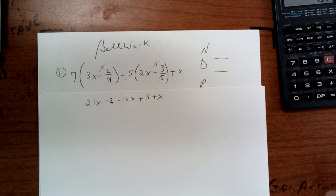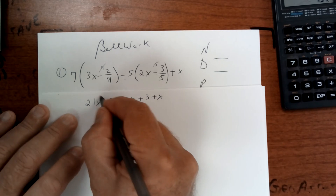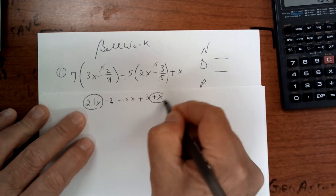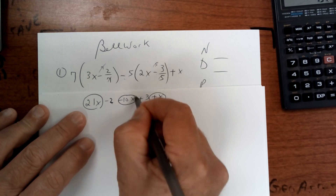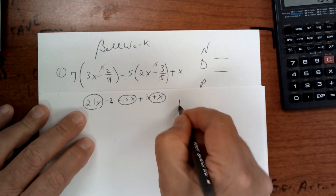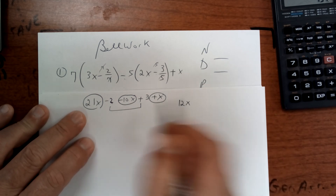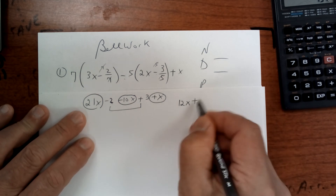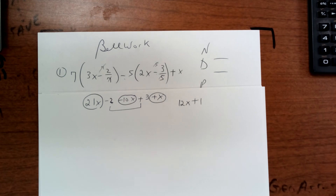Pause, take a look at it, make sure everything looks right — and it does. At this point add up the x's: 21 plus 1 makes 22, minus 10 — so 22 minus 10 is 12x. Then this one and this one gives plus 1. So the answer is 12x plus 1. Always double-check, but that looks good. Let's go to the next one.